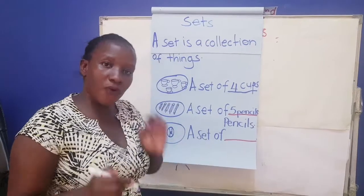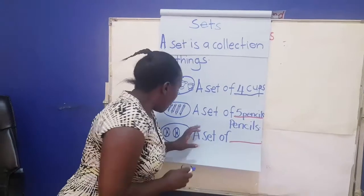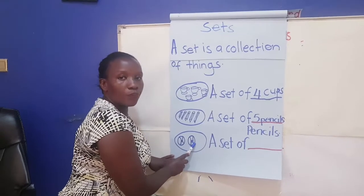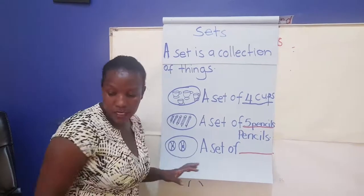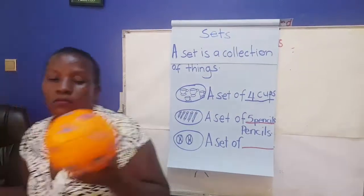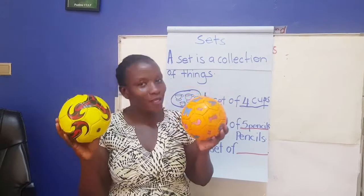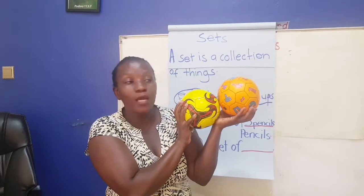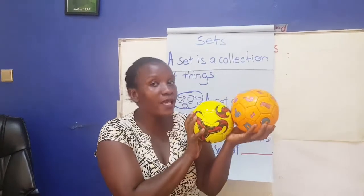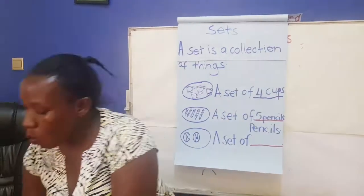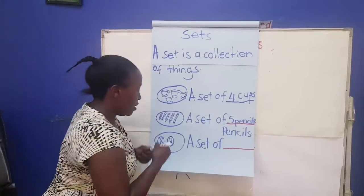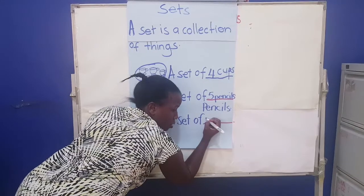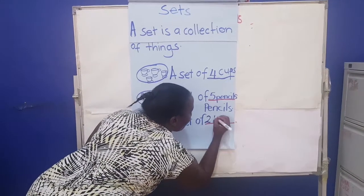We have another set here. Let's count together: one, two. What do you think these are? They are balls — two balls. Let's count: one, two, which makes it two balls. Our sentence says: a set of two balls.